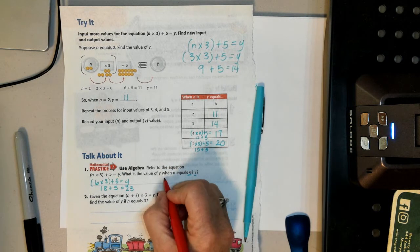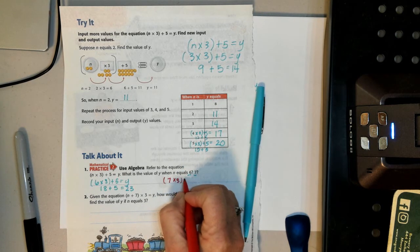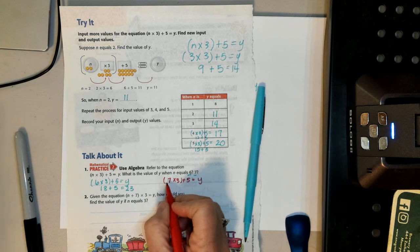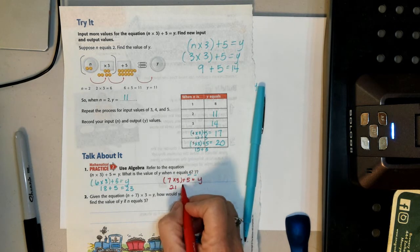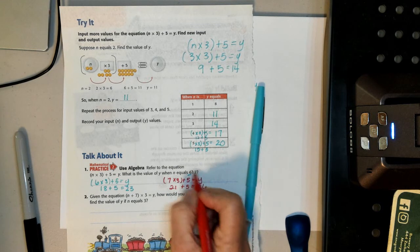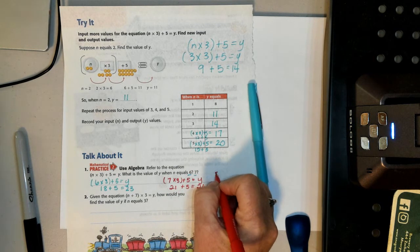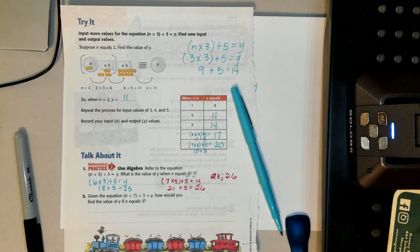I'm going to go, same equation. 7 times 3 plus 5 equals y. 7 times 3 is 21 plus 5 equals 26. So the answer would be 23 and 26.